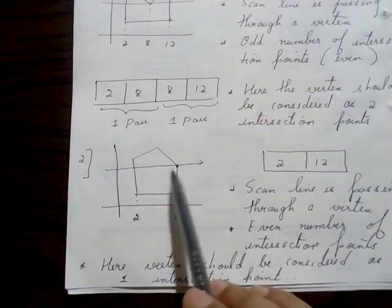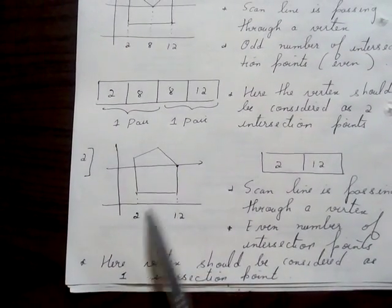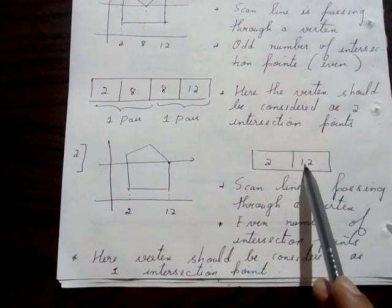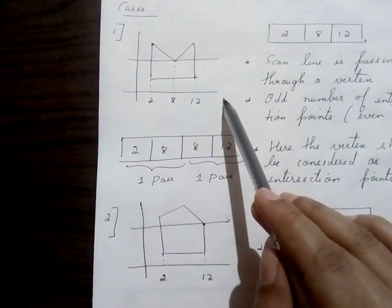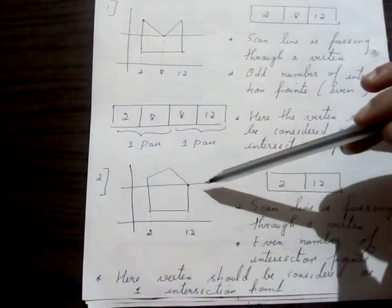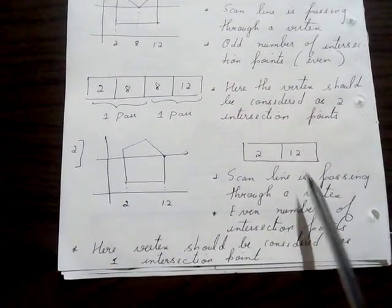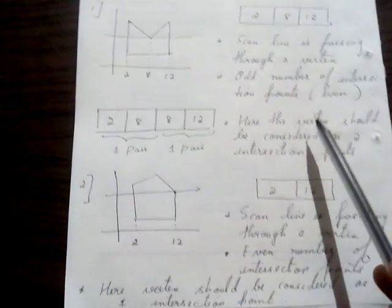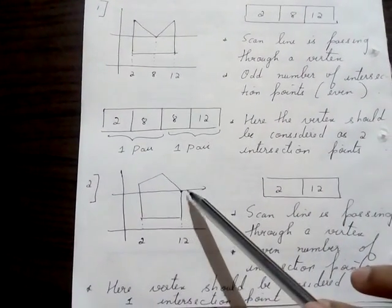However, in another example, a scan line passes through a vertex where the only intersection points are 2 and 12 — an even number — so they already form a valid pair. Here the vertex is considered as only one intersection point. This raises the question: when should a vertex be counted as one intersection point and when should it be counted as two?